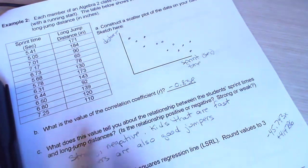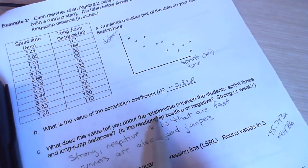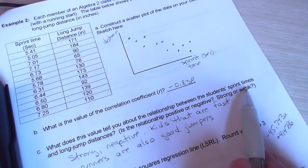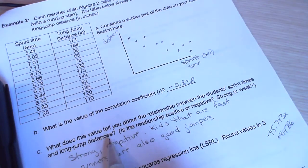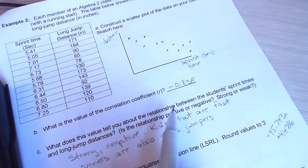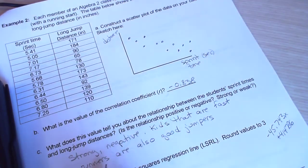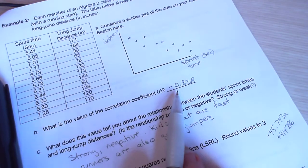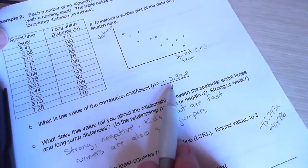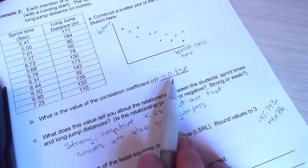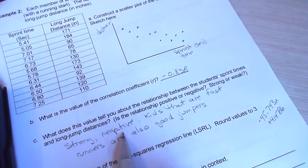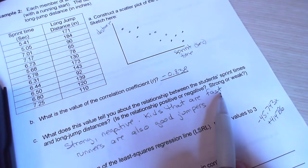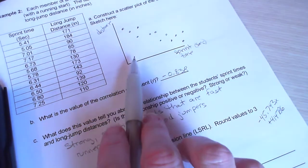So there's my correlation coefficient, negative 0.838. What does this value tell you about the relationship between the student's sprint time and long jump distances? Well, you can look at your scatterplot and see that it's a negative relationship.